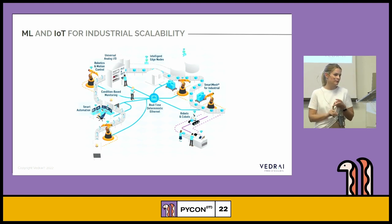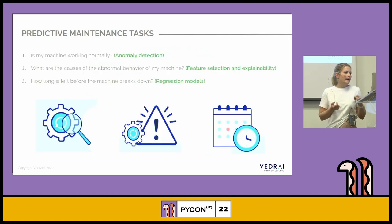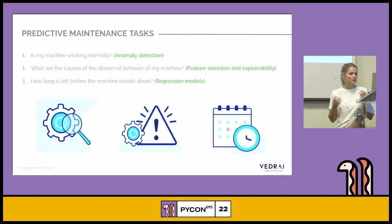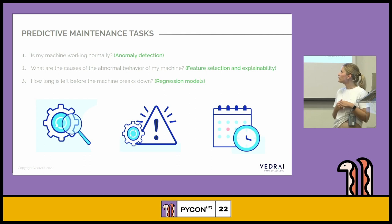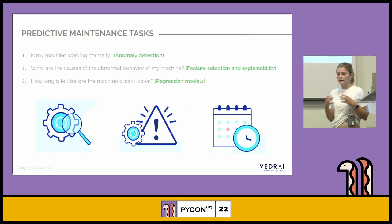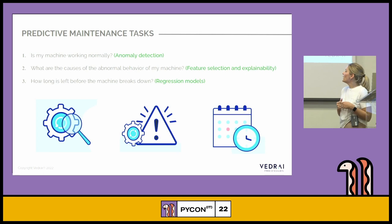Now we know what predictive maintenance is and why it's valuable. The most important part before building machine learning models is to understand what we need and translate it into machine learning language. When doing predictive maintenance we try to answer three questions. The first is: is my machine working normally? We analyze sensors, analyze machine behavior and health, and apply anomaly detection algorithms to understand if something is going wrong.